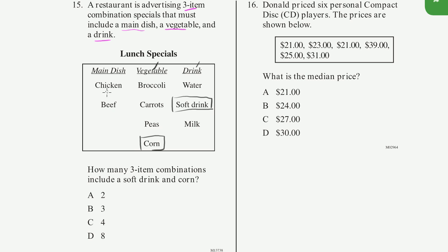Well, we only have two choices. We only have freedom when it comes to picking the main dish because the problem has already picked for us our vegetable and our drink, the corn and the soft drink. And so there's only two possible main dishes. So those are the three item combinations that include a soft drink and a corn.